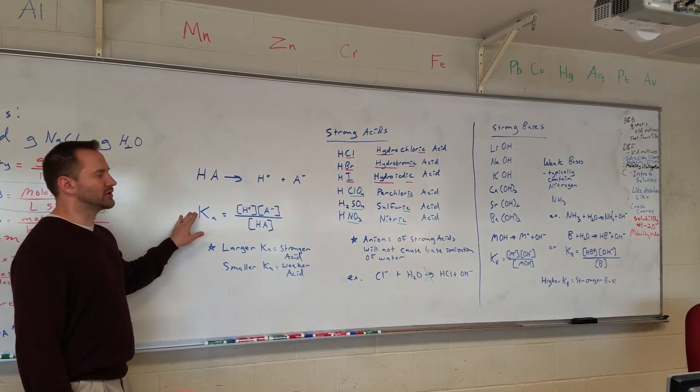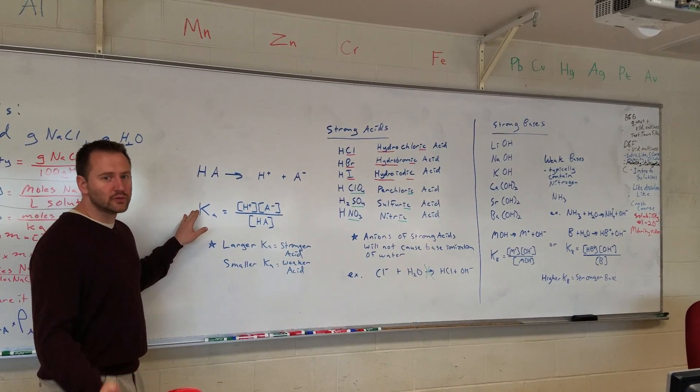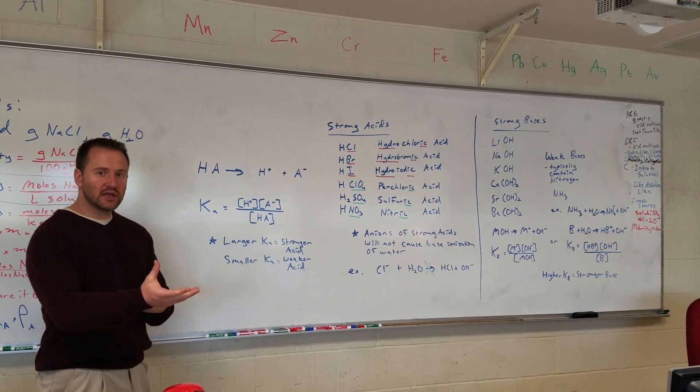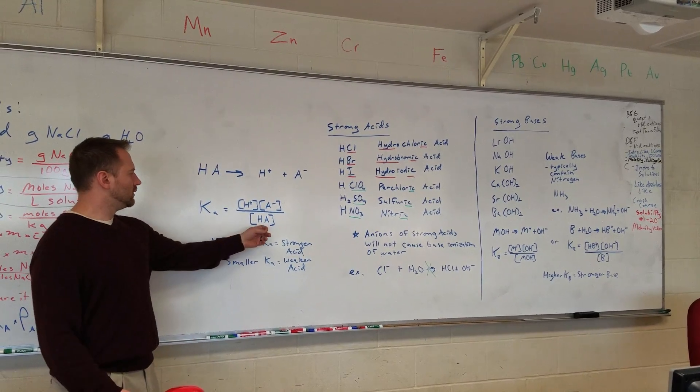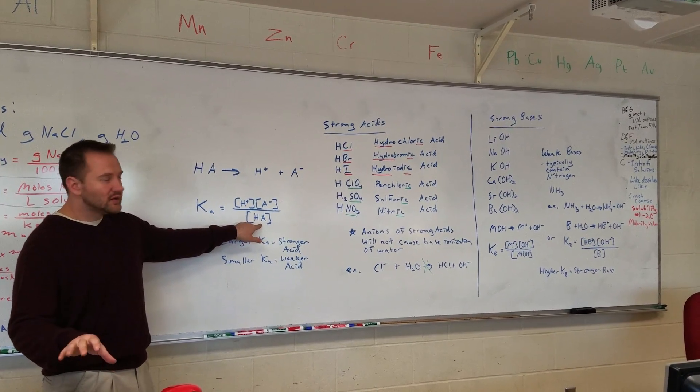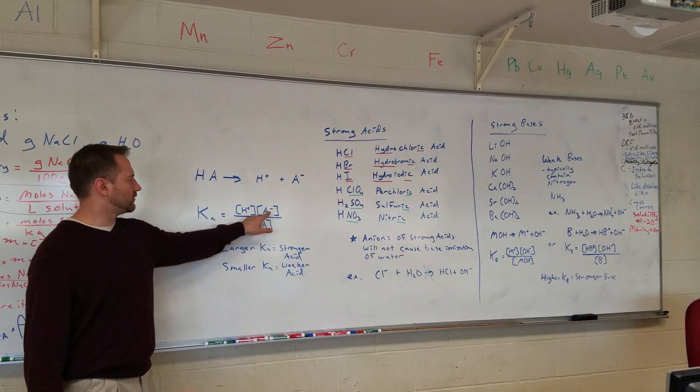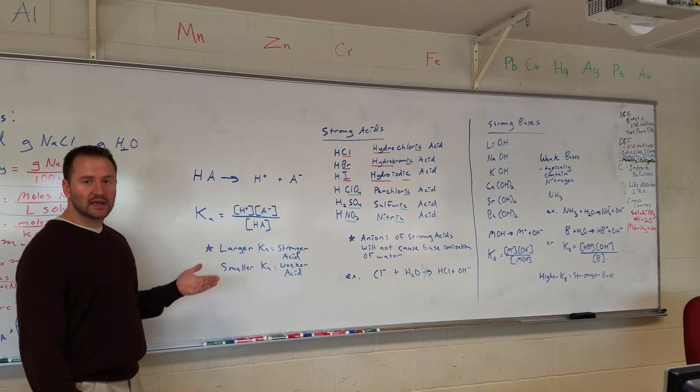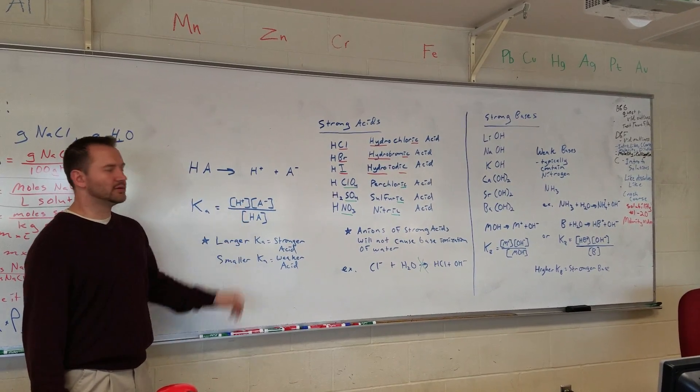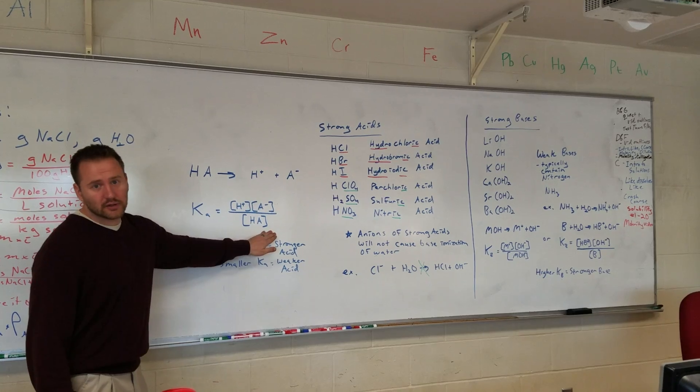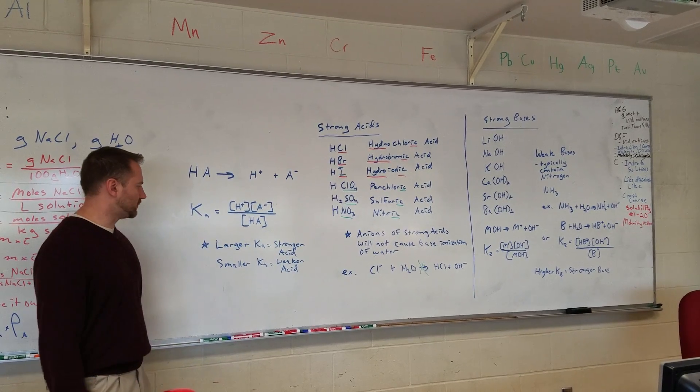So a Ka expression, we're going to get into this in more detail when we do equilibrium, represents the ratio of dissociated particles to the undissociated acid. So this would be like the acetic acid, and this would be like the dissociated amount. So the larger the Ka value, the more often it breaks apart. The smaller the Ka value, that would mean a larger denominator, the less often it breaks apart.